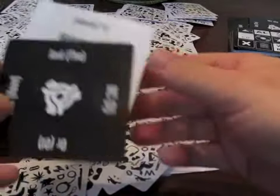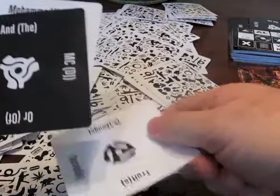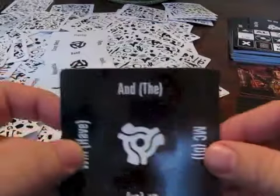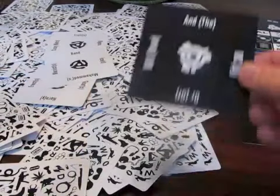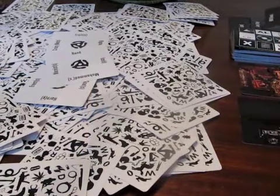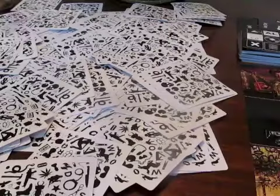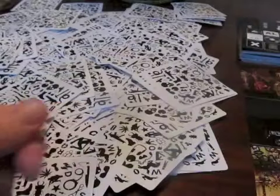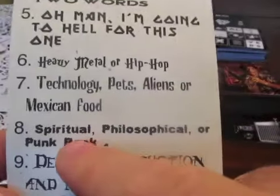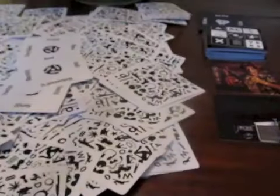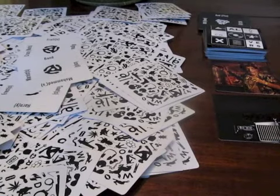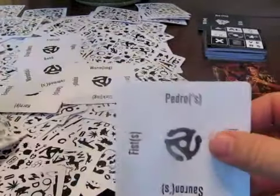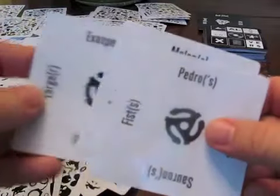All players must then discard all the word cards used to make their band name back into the word card pile, but face up. Free word cards should be returned to the free word deck. The winner of the round also receives the theme list and becomes the first player. The new first player announces the next theme, and players then have the option to discard any number of cards in their hand, again face up. All players then draw back up to six cards.